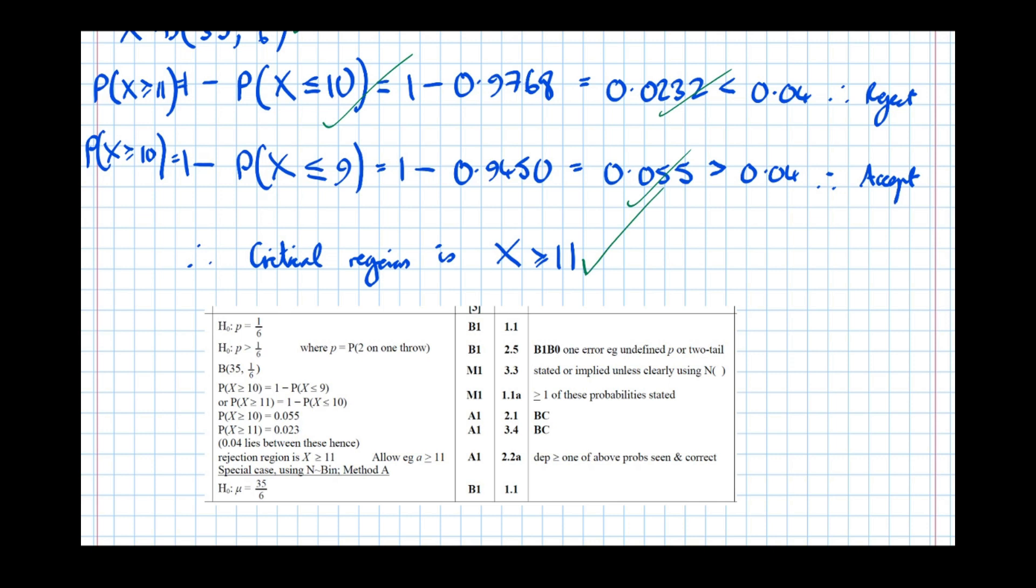And there's 1, 2, 3, 4, 5, 6, 7 marks gained. Ignore this last one. That's just a special case of a different method that you could have used that involves using the normal approximation to the binomial distribution. But not advised, we've gained all the marks in the best way possible now.